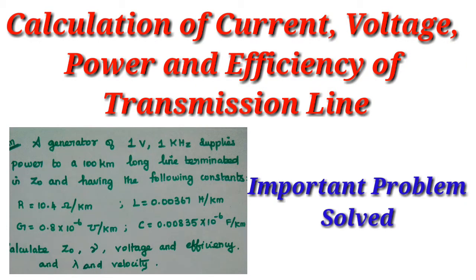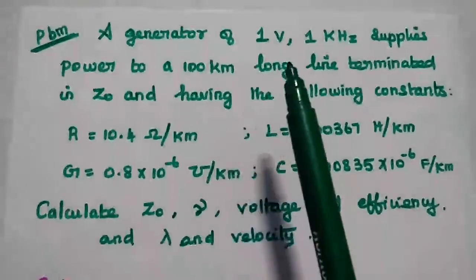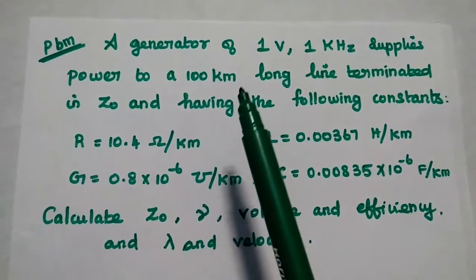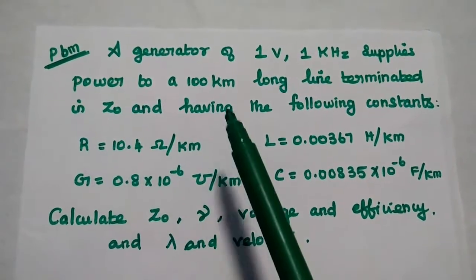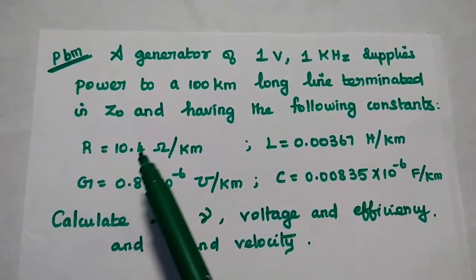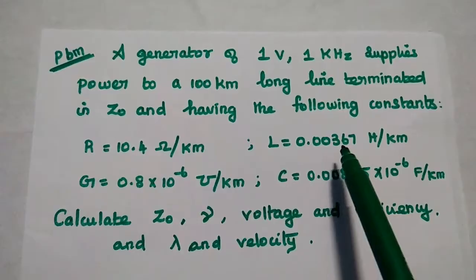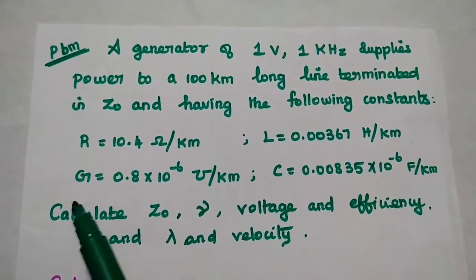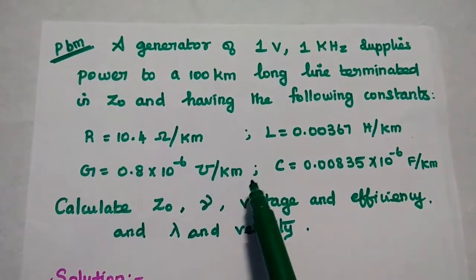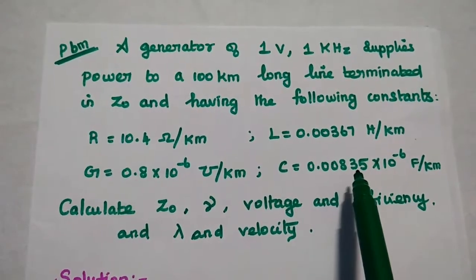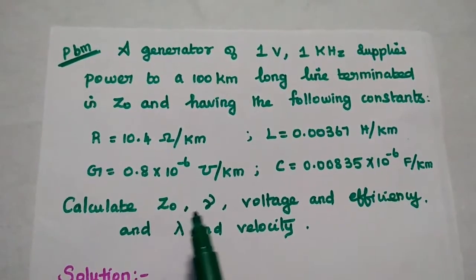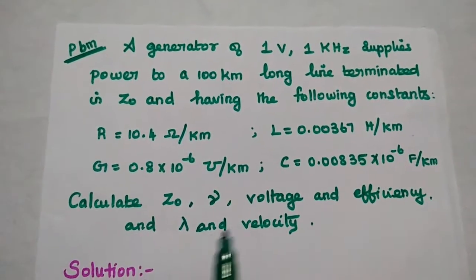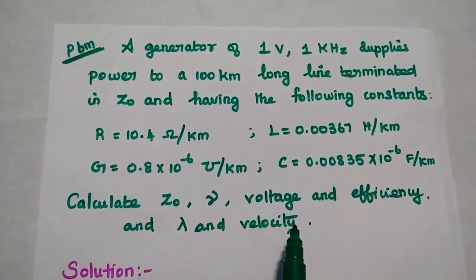Dear students, now we are going to solve an important problem to calculate the efficiency of a transmission line. A generator of 1 volt, 1 kilohertz supplies power to a 100 kilometer long line terminated in the characteristic impedance, having the following constants: R is equal to 10.41 per kilometer, L is equal to 0.00367 henry per kilometer, G is equal to 0.8 × 10⁻⁶ mho per kilometer, C is equal to 0.00835 × 10⁻⁶ farad per kilometer. Calculate the characteristic impedance, propagation constant, voltage and efficiency, also the wavelength and velocity of propagation.